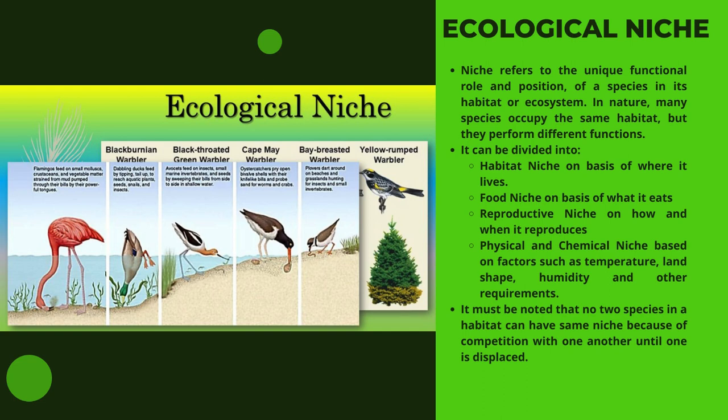Now let us look at ecological niche. Niche refers to the unique functional role and position of a species in its habitat or ecosystem. In nature, many species occupy the same habitat but they perform different functions. Niche can be divided into: habitat niche — based on where it lives; food niche — based on what it eats; reproductive niche — based on how and when it reproduces; and physical and chemical niche — based on factors such as temperature, land shape, humidity, and other requirements. No two species in a habitat can have the same niche because of competition until one is displaced.